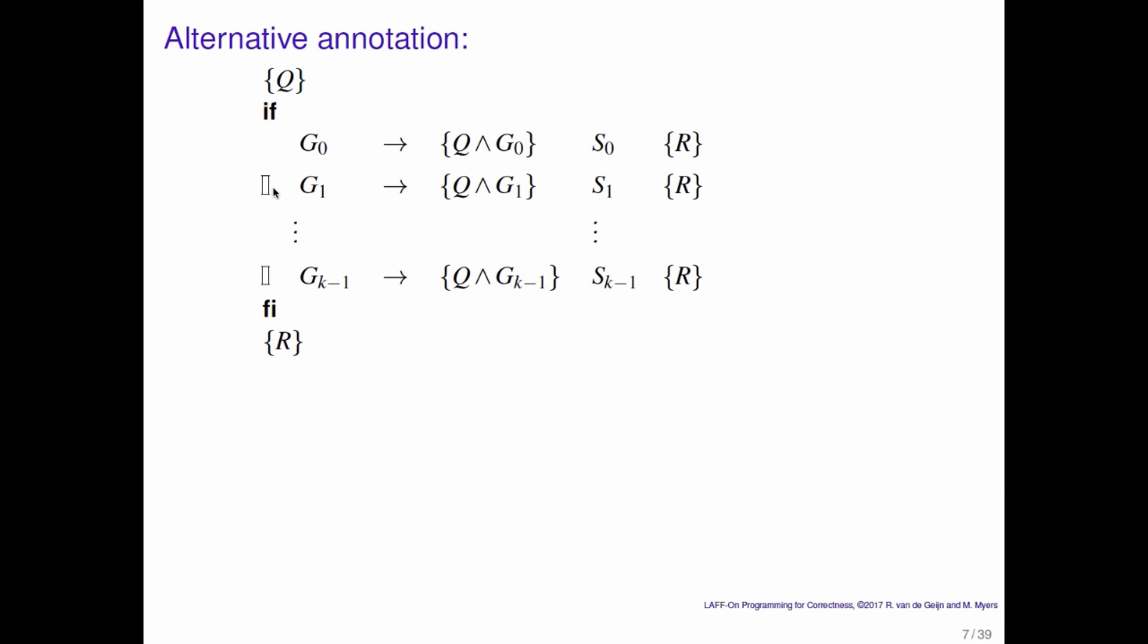then immediately after that, and before statement S0 is executed, Q and G0 must be true, and therefore the Hoare triple Q and G0, S0, R must hold if this is to be a correct code segment within the if command. And the same thing, of course, is true for the guarded statement with G1 through GK minus 1.